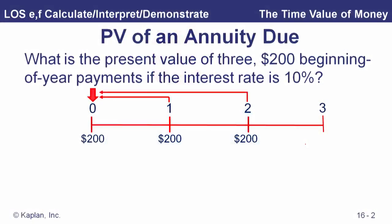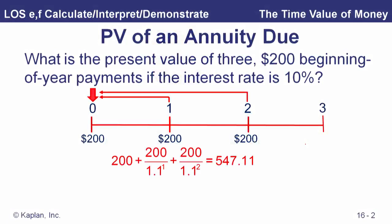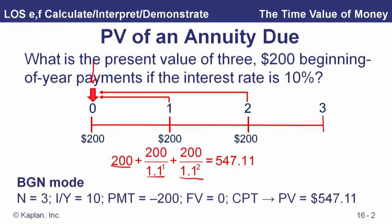Now let's look at the present value of an annuity due — same three $200 payments, same interest rate of 10%. The present value of that first payment is today's money, so it's $200. We take the present value of the other two, add them all up, and that gives us the time zero value of those payments: 547.11. On the calculator in begin mode, N equals three, 10%, payments entered, future value zero — compute the present value and get 547.11 that way as well.